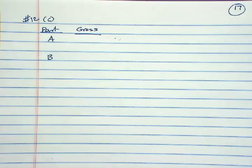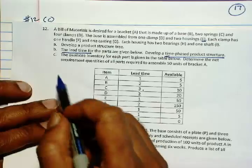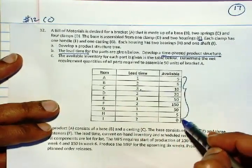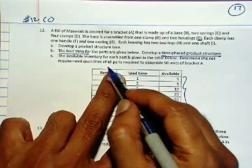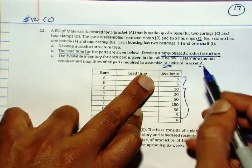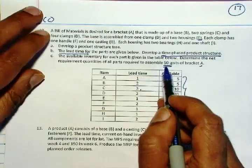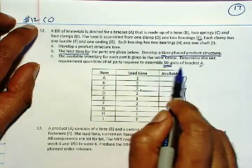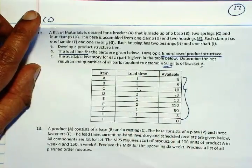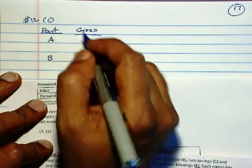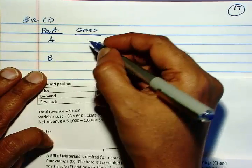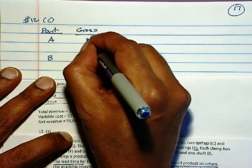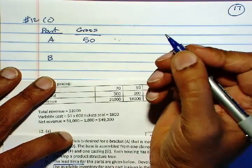Okay, next is part C and we have available inventories here. Determine the net requirements if we want to have 50 units available. The net requirement of 50 units for item A. So for item A, the gross requirement - not net requirement, gross requirement - we need 50 units.